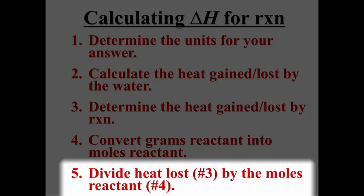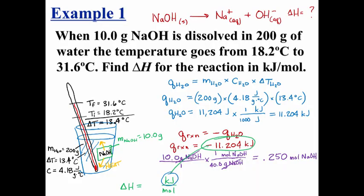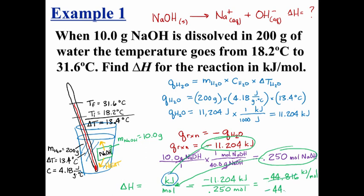All right, the last step is to combine the kilojoules of heat and moles of reactant. This means minus 11.204 kilojoules divided by .250 moles, which gives negative 44.816 kilojoules per mole. Round to the correct number of significant figures, and we get negative 45 kilojoules per mole.